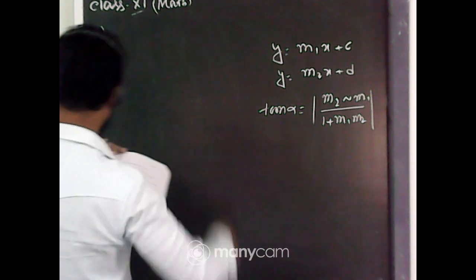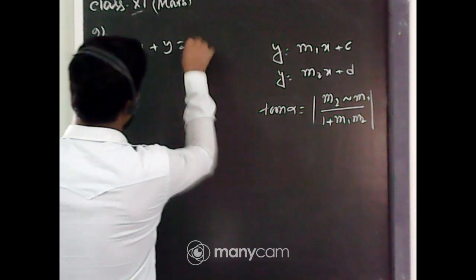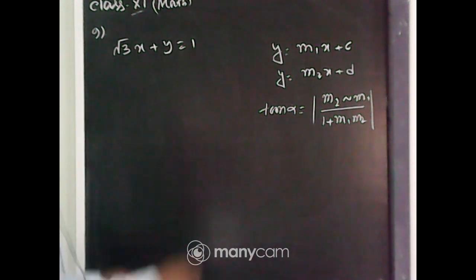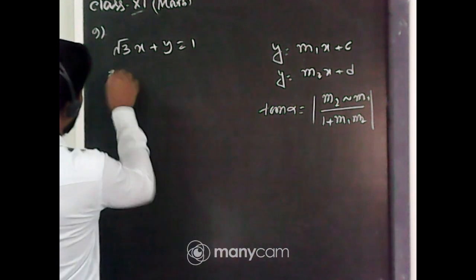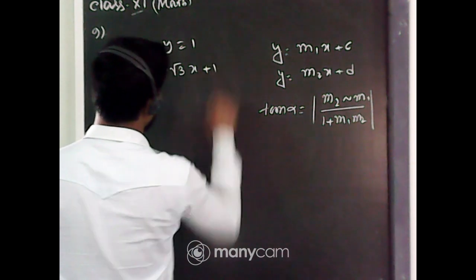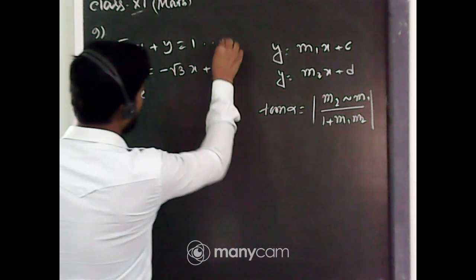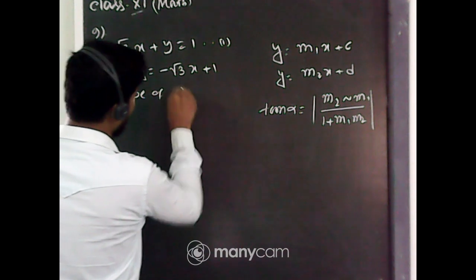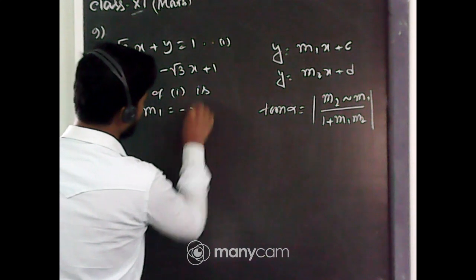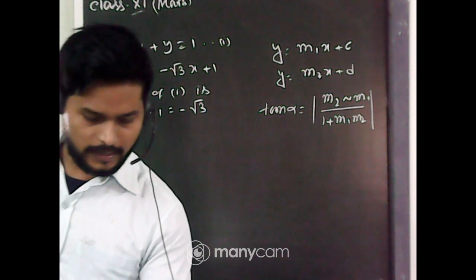The first equation is √3·x + y = 1. Rearranging to slope-intercept form: y = -√3·x + 1, so slope m₁ = -√3.